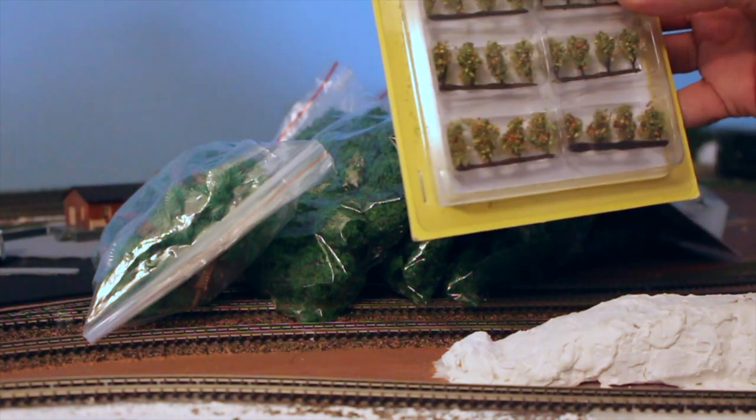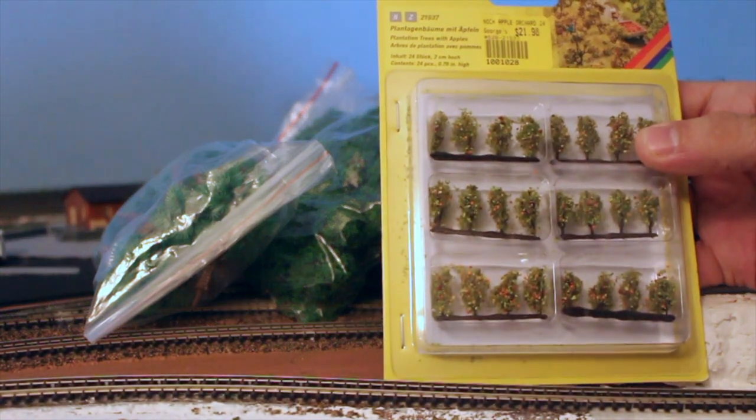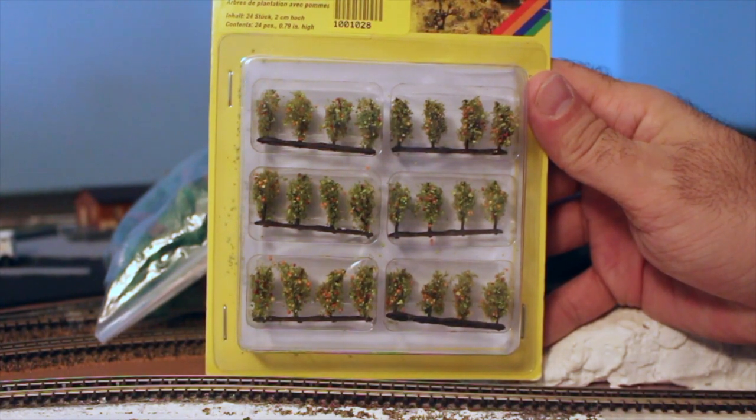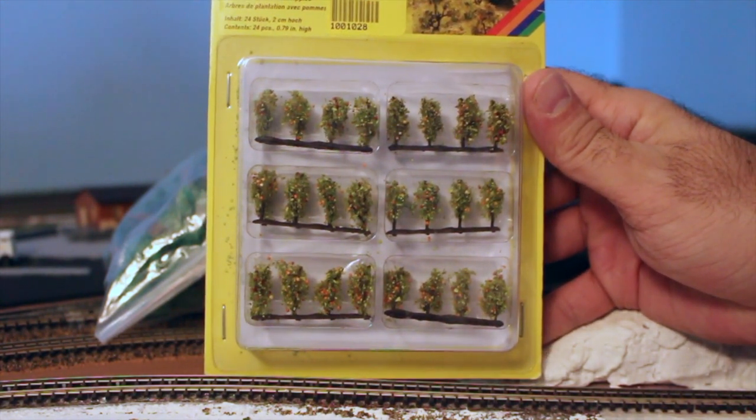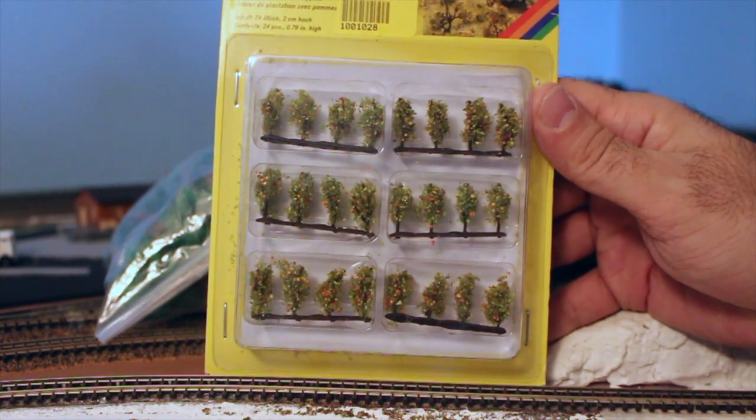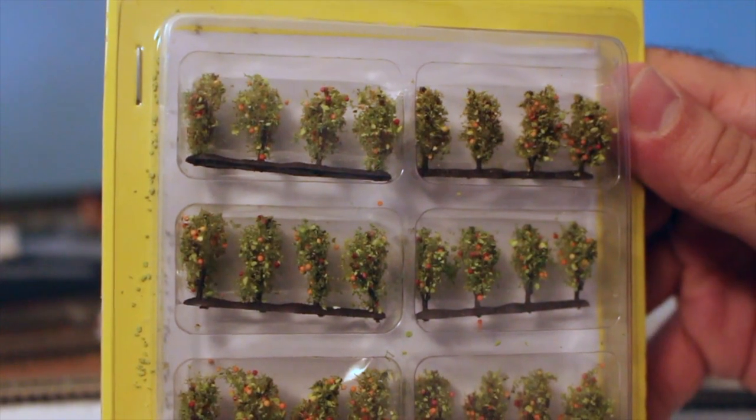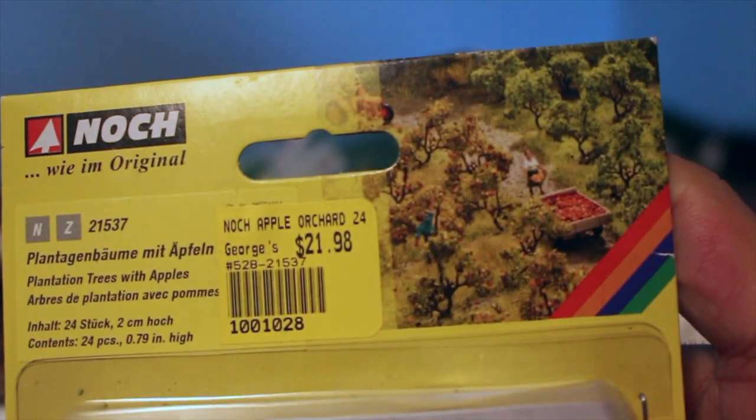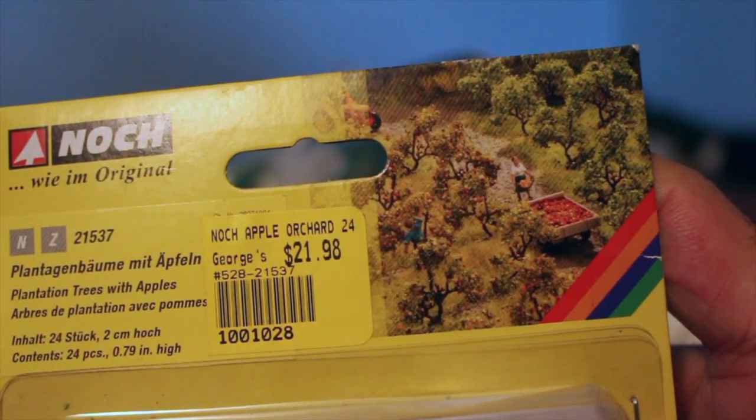So first one here is actually apple trees. As you can see this is N scale, Z scale. This one is from Noch, I apologize if I'm not pronouncing it properly, but looks pretty good. So there's an example right up there. I got this one from my local hobby store.